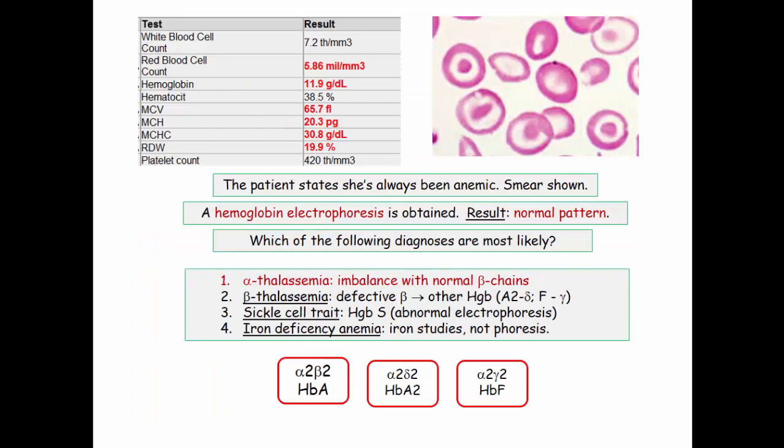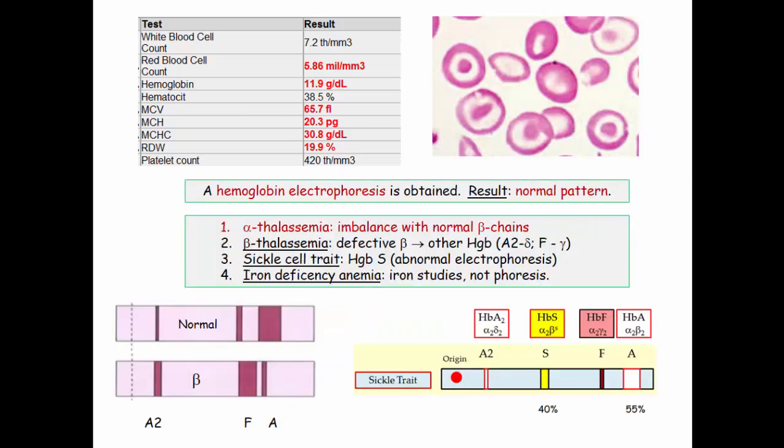Regarding electrophoresis, you do not need to be an expert, but you do need to appreciate the different hemoglobins and how the defect in thalassemia impacts synthesis. In alpha thalassemia, the beta chains are normal — you are simply making less hemoglobin A due to deletions in the alpha gene. Consequently, the electrophoresis is normal; you don't ramp up A2 or hemoglobin F. There are plenty of beta chains, so no need to employ delta or gamma chains. Here are a couple of electrophoresis patterns to be familiar with.